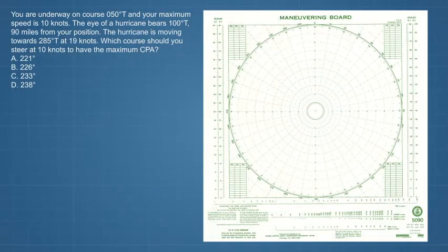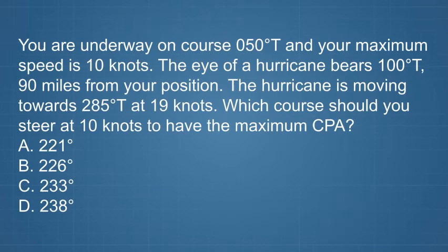We'll use the following U.S. Coast Guard exam question to determine, step-by-step, the course to steer for the farthest distance from the storm. You are underway on course 0-5-0 degrees true, and your maximum speed is 10 knots. The eye of the hurricane bears 1-0-0 degrees true, 90 miles from your position. The hurricane is moving towards 2-8-5 degrees true at 19 knots. What course should you steer at 10 knots to have the maximum CPA?